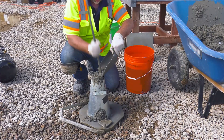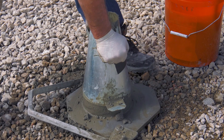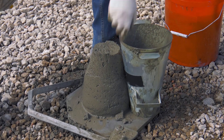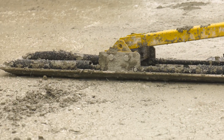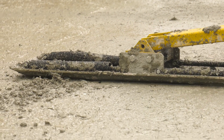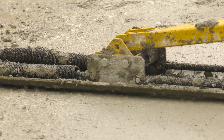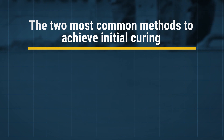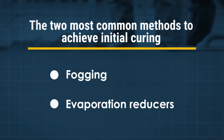Largely due to increased use of supplementary cementitious materials and low slump concrete in slip form paving, modern concrete mixtures often have little to no bleeding, making initial curing all the more relevant. The two most common methods to achieve initial curing are through fogging and evaporation reducers.